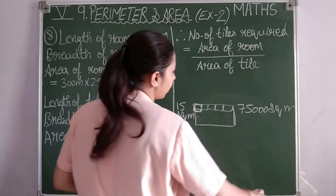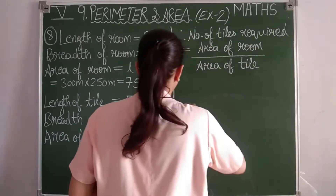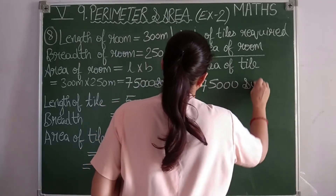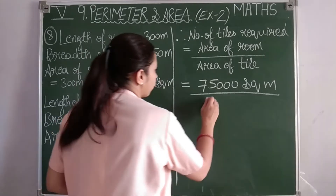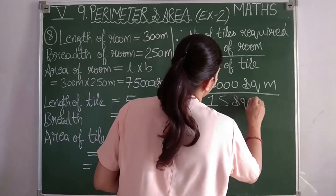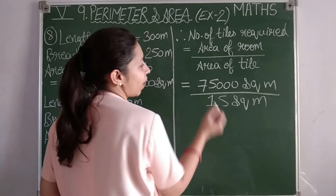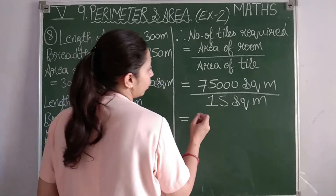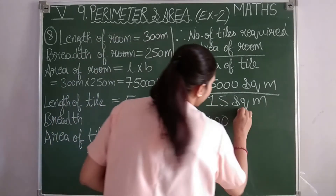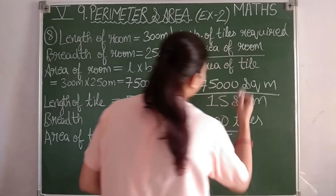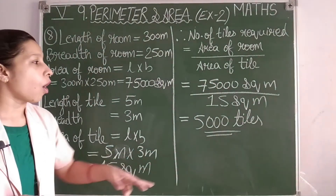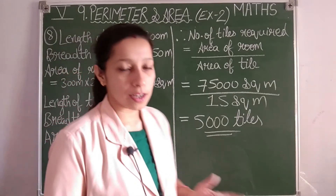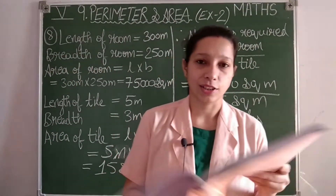Number of tiles equals 75,000 square meters divided by 15 square meters. Since 15 fives are 75, we get 5,000. So 5,000 tiles of 15 square meters each are needed to cover the 75,000 square meter floor.